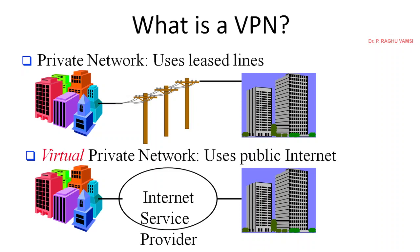For example, there should be communication between country heads. They will establish a private, secure channel, and only via that secure channel can these country heads speak with each other. That is what is called a private network, which uses the leased line. But what is the problem with these secure channels or leased lines?